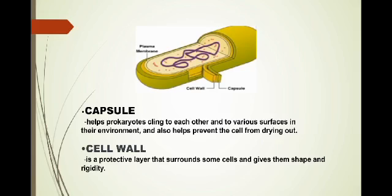The first one is the capsule. When we say capsule, it helps prokaryotes cling to each other and to various surfaces in their environment. It also helps prevent the cell from drying out.